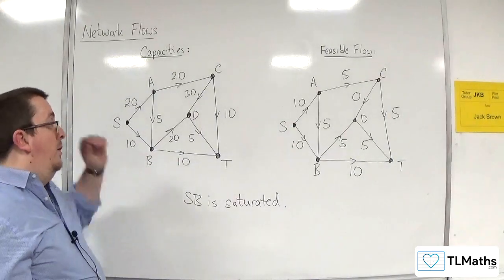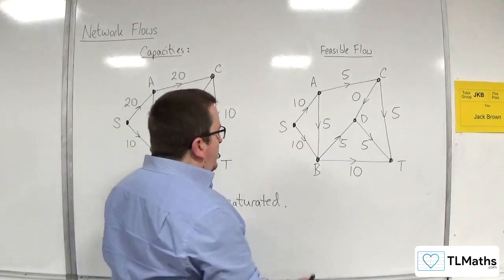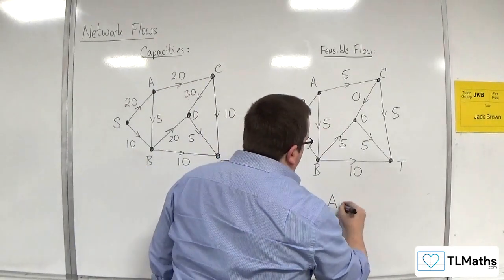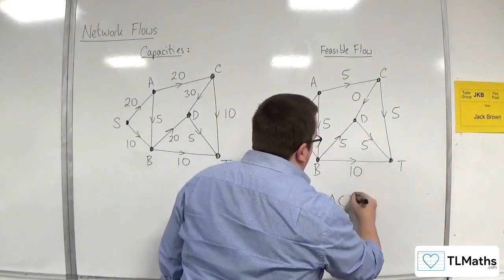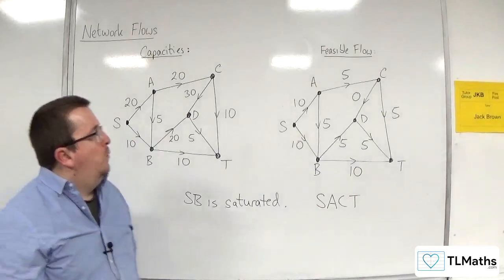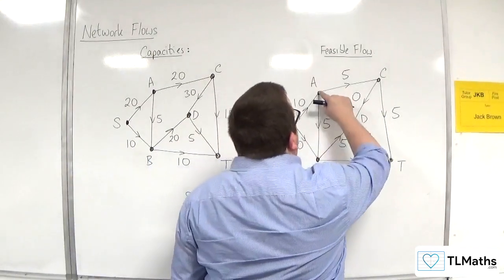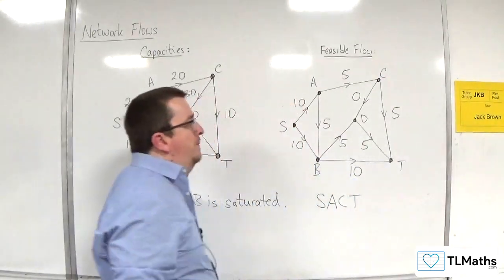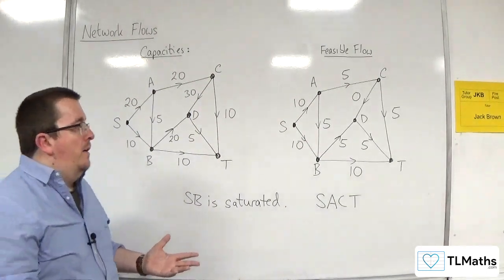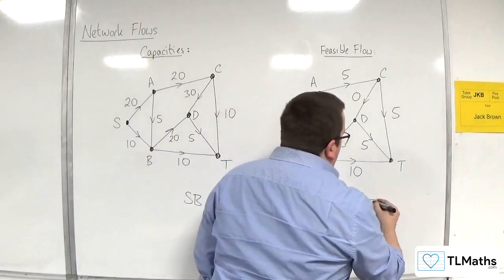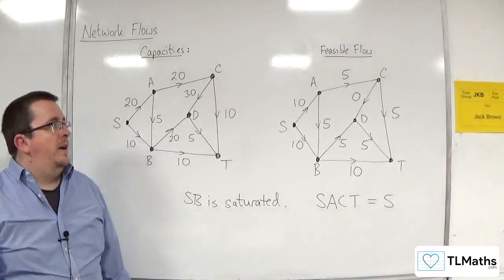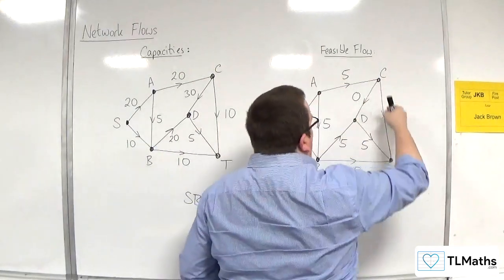What else could we ask? Well, we could ask things like, what is the flow along S, A, C, T? Well, because you've got 10, 5, and 5, when you're talking about the flow through that part of the network, you've just got to go for the smallest of the values, 5. Because only 5 can flow along that route.